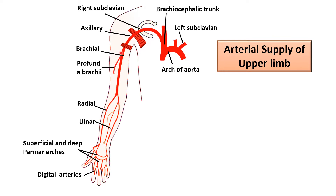The axillary artery in the arm is called the brachial artery, which gives an important branch known as the profunda brachii artery — the main artery of the arm. In the cubital fossa at the level of the radial tuberosity, the brachial artery divides into a medial branch, the ulnar artery, and a lateral branch, the radial artery. These two arteries supply the forearm and hand, and in the palm their branches form two arches — the superficial and deep arches — from which digital arteries supply the fingers.